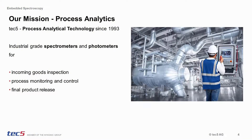TEC5 is a manufacturer of industrial-grade spectrometer systems and components for process analytics since 1993. We make use of optical spectroscopy as it is one of the most versatile and flexible tools in modern process analytical technologies. It is a well-proven and established method for fast and non-contact measurements, and our dedicated spectrometer and photometer systems are used in manifold applications from incoming goods inspections to process monitoring and final product release.